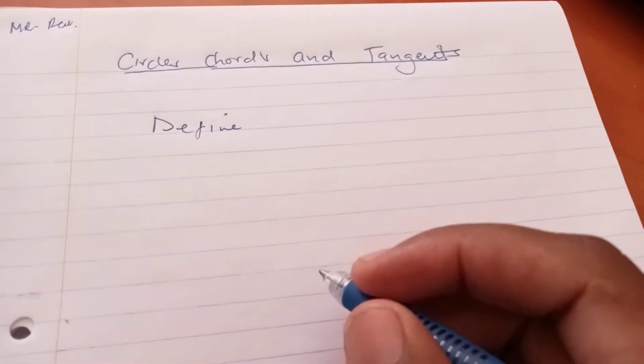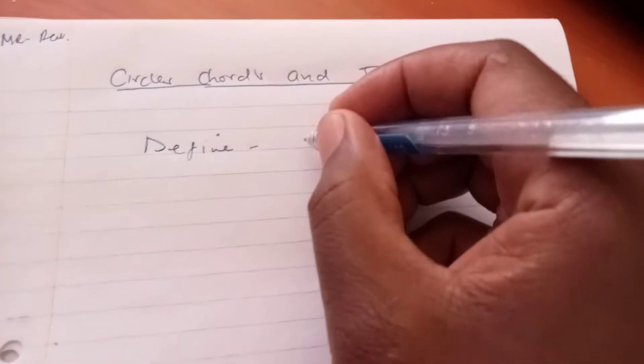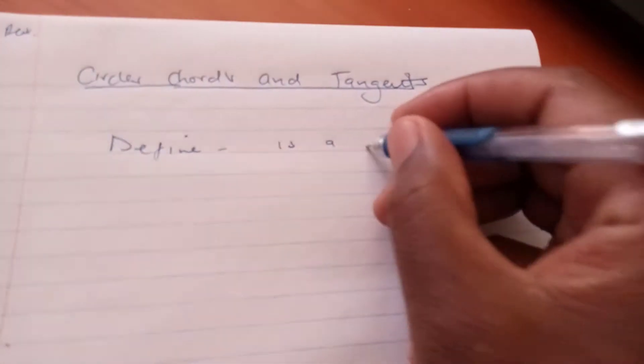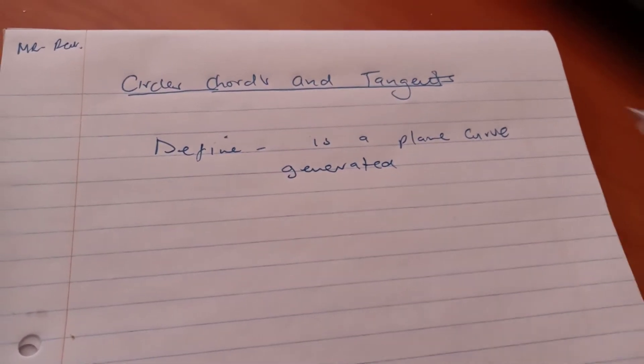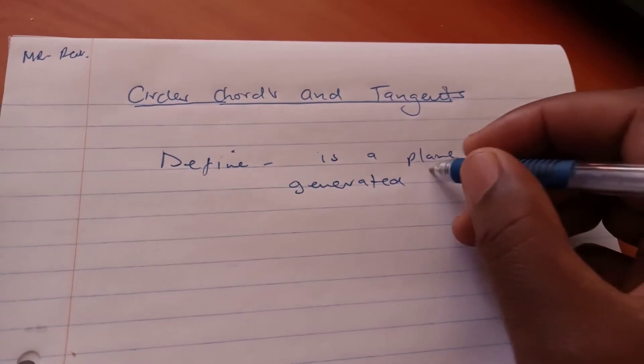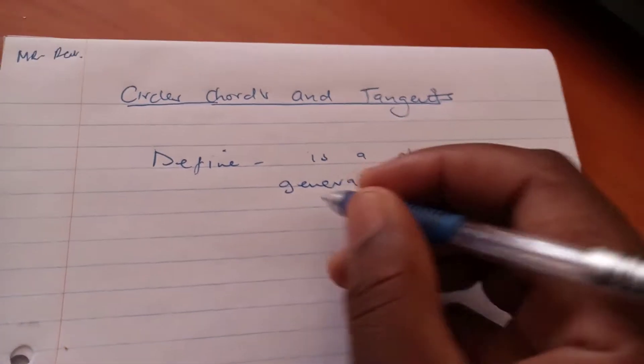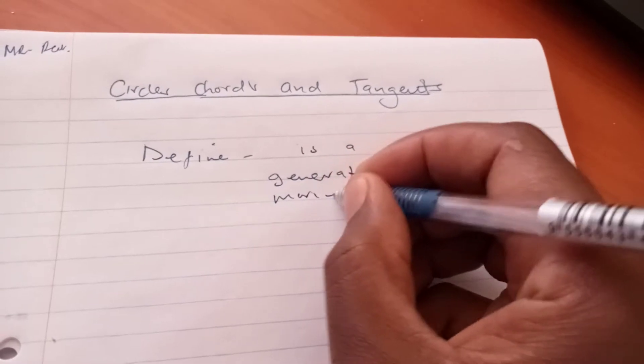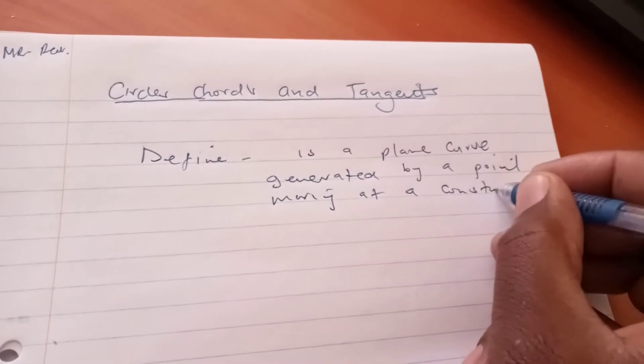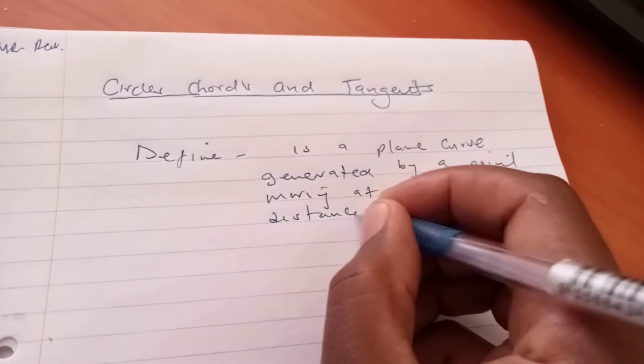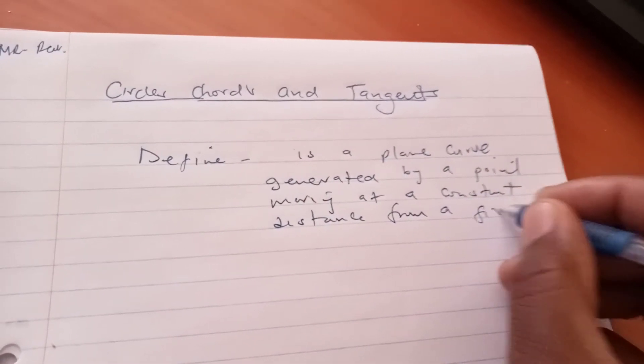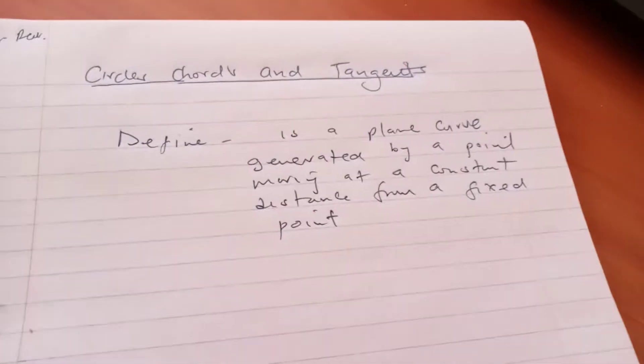So a circle is a plane curve generated by a point moving at a constant distance from a fixed point. Actually you can look at it as a locus of points.